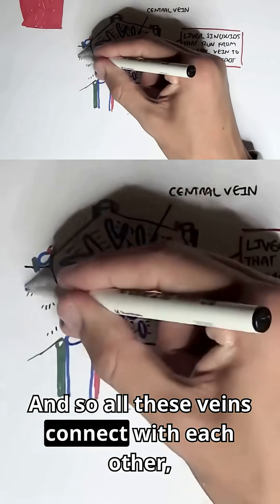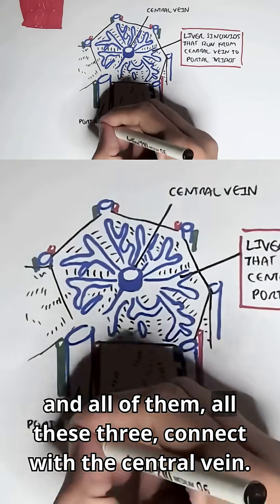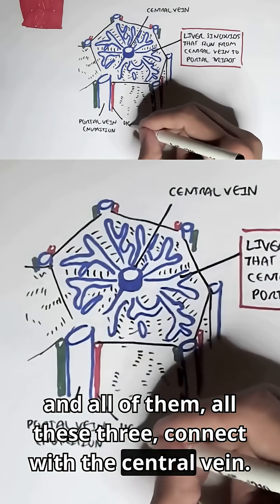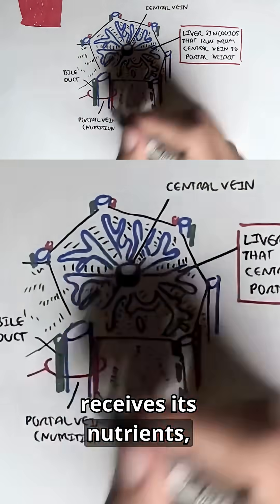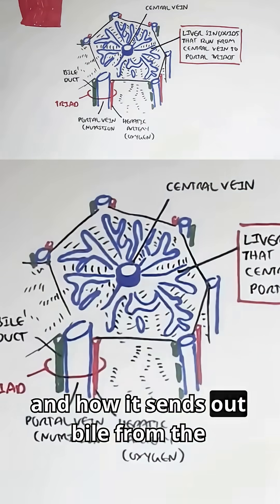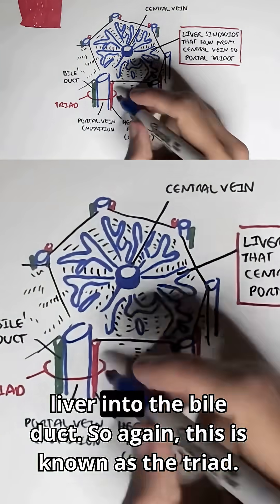And so all these veins connect with each other, and all of them, all these three, connect with the central vein. And this is how the liver receives its oxygen, receives its nutrients, and how it sends out bile from the liver into the bile duct.